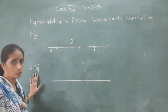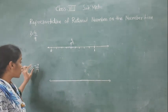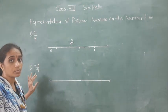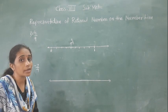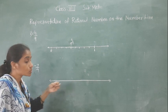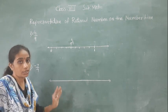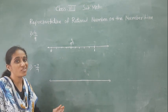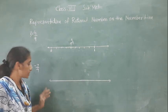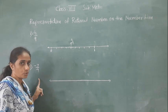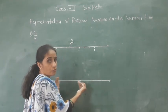Next question: minus 7 upon 4. Where will this number come on the number line? It is negative, which means obviously it will come to the left of 0 on the number line.